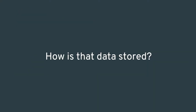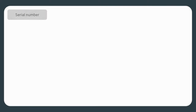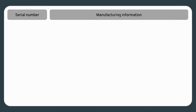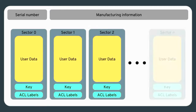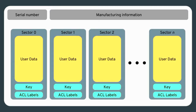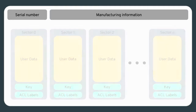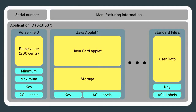How is data stored? Every card has a serial number and may contain manufacturing information. Simple cards are comprised of sectors containing user data, access control labels like read-only, read-write, and decrement-only, and keys used for authentication. This is how MIFARE Classic and MIFARE Ultralight cards present themselves. MIFARE Classic is used in Brisbane's Go card, Canberra's MyWay card, Tasmania's Green card, and Perth's SmartRider. More complex cards divide memory into applications with well-known IDs, allowing a card to have multiple functions.